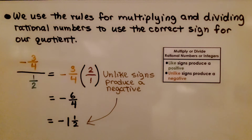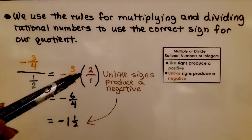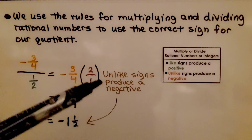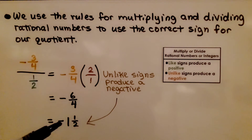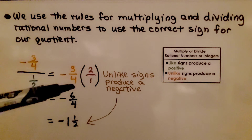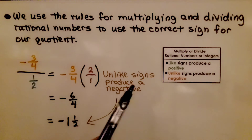We use the rules for multiplying and dividing rational numbers and integers to use the correct sign for our quotient. We have negative 3/4 divided by 1/2. We multiply by the reciprocal, 2 over 1. They have unlike signs, so that produces a negative product. We get negative 6/4, which simplifies to negative 1 and 1/2. When we have unlike signs, they produce a negative.